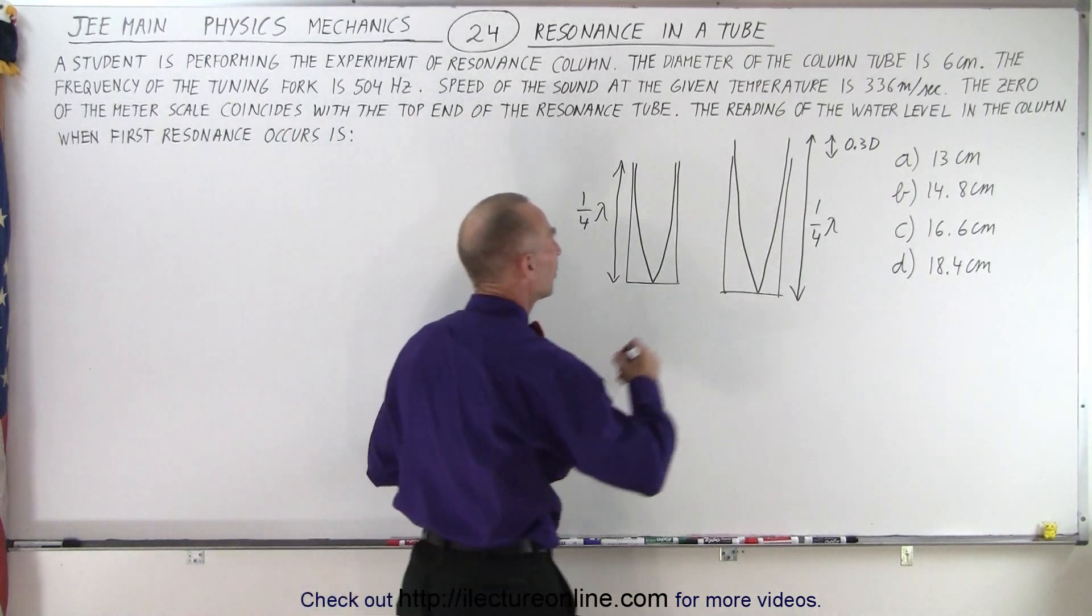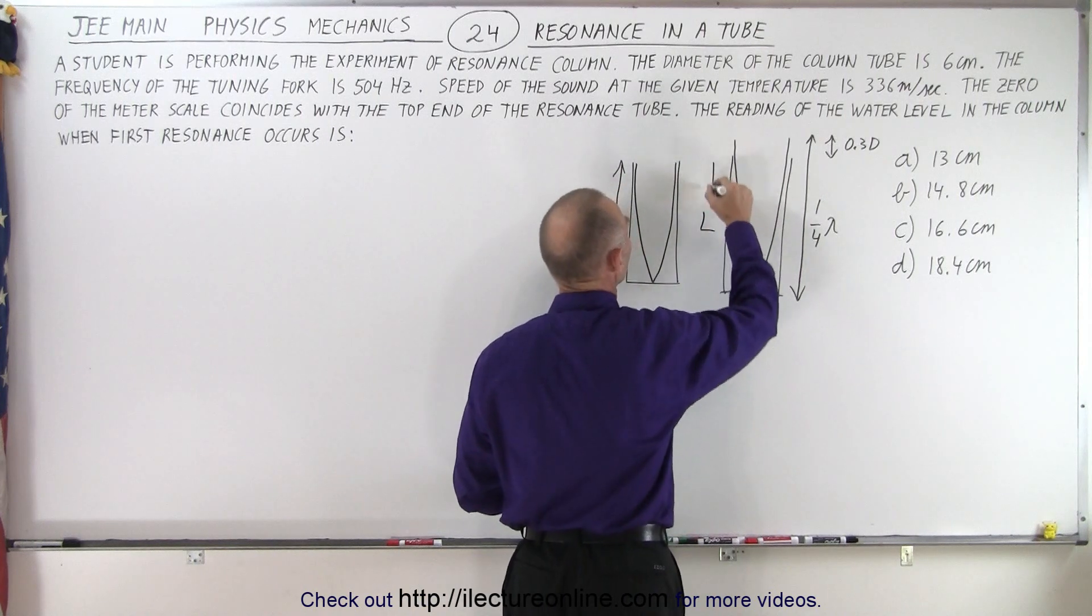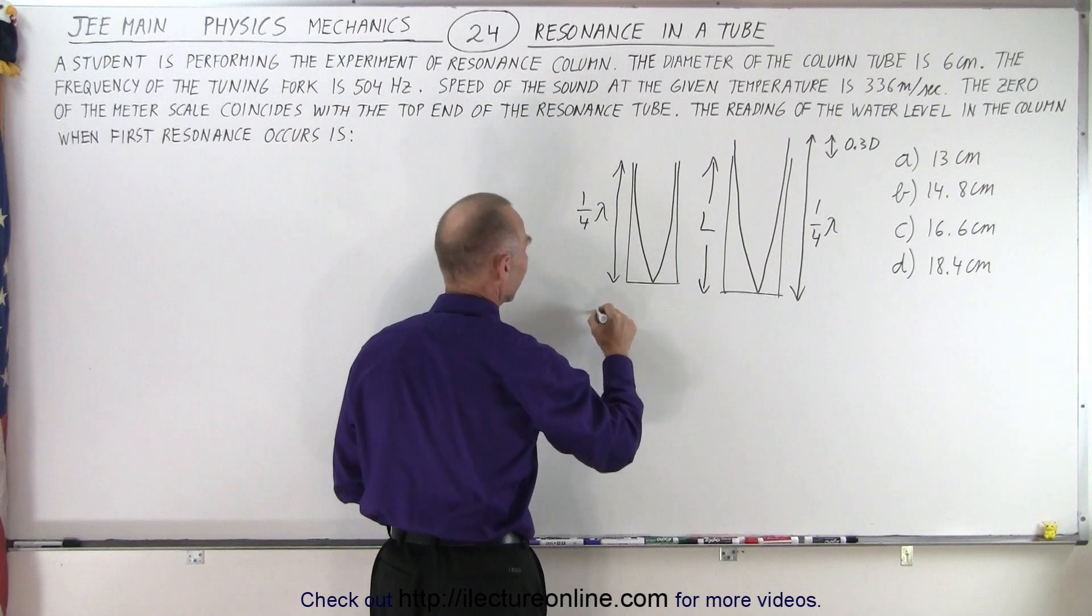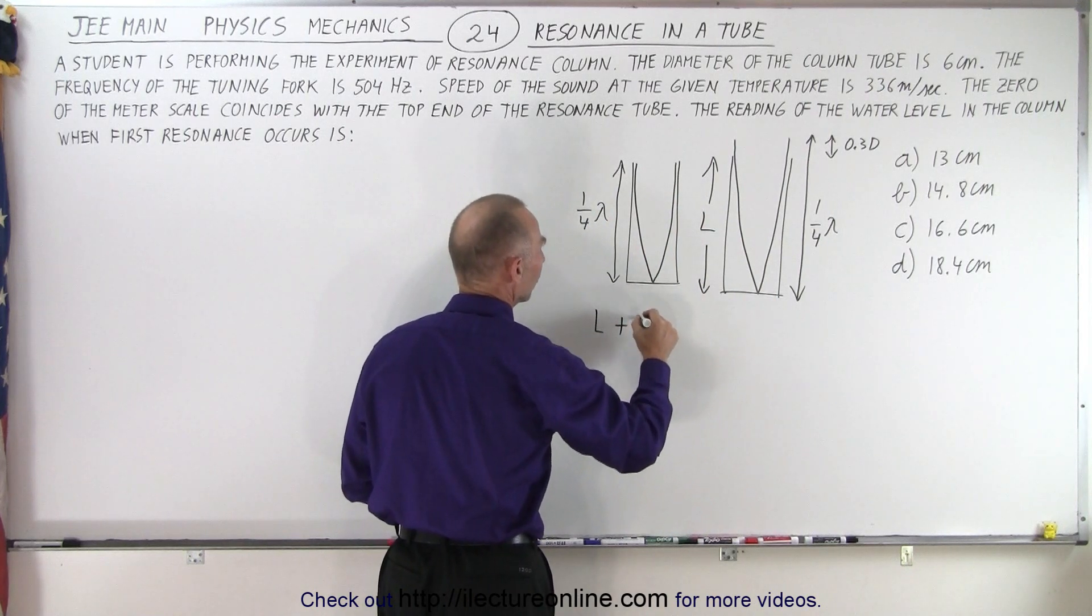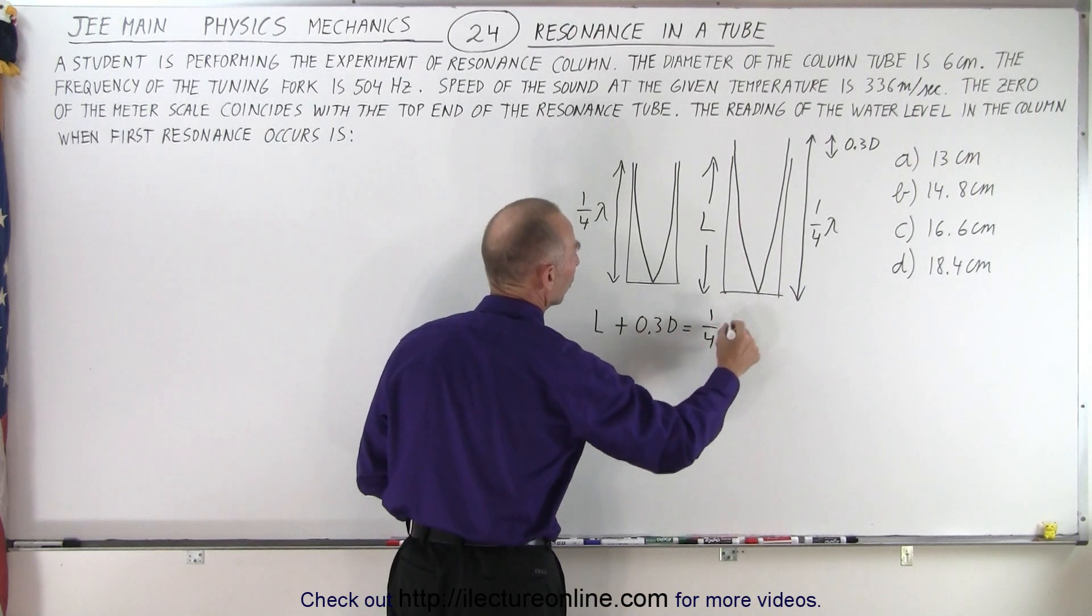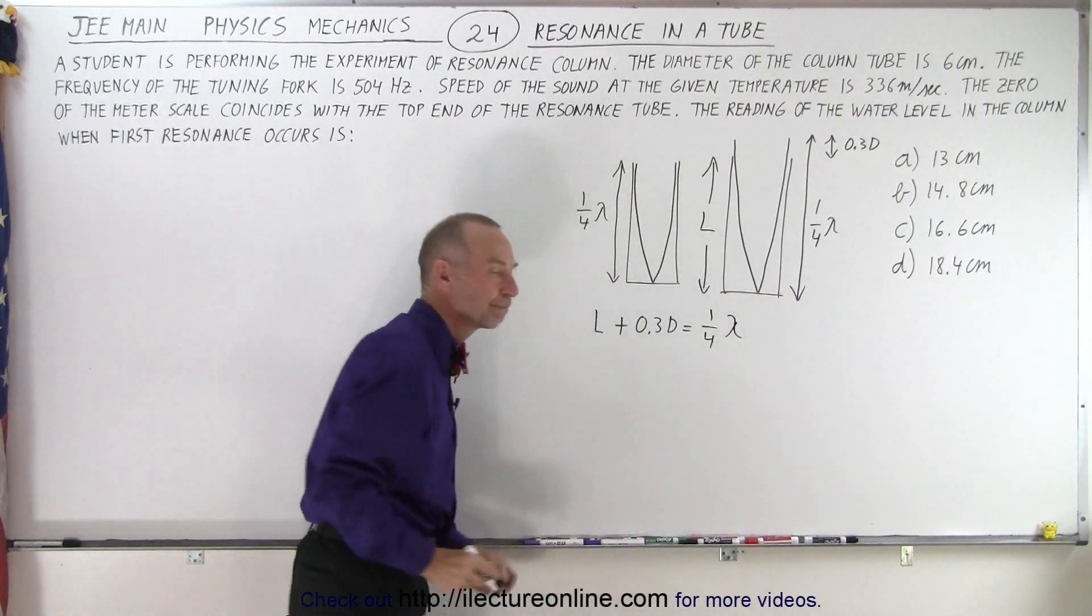Which means that if we call this the length of the tube, and this here is 0.3 times the diameter, we could then say that the length of the tube plus 0.3 times the diameter must equal one quarter of the wavelength.